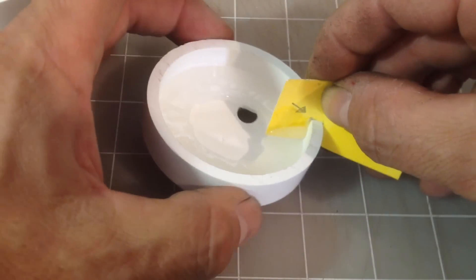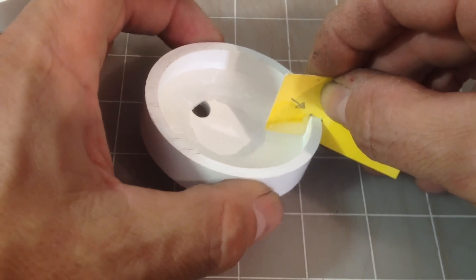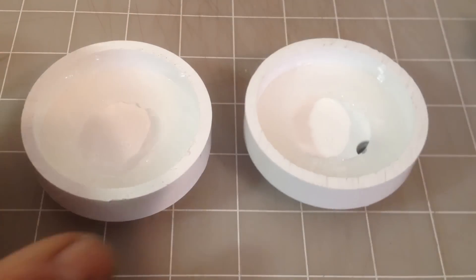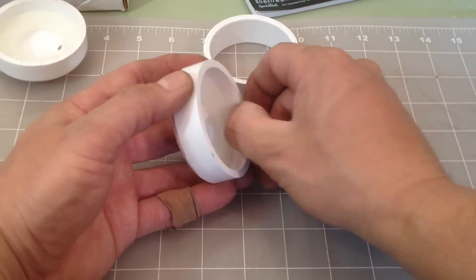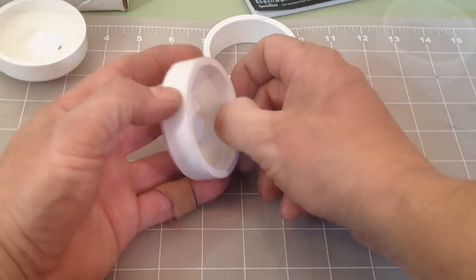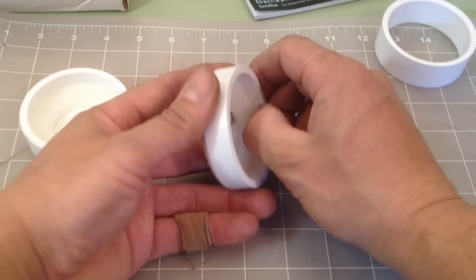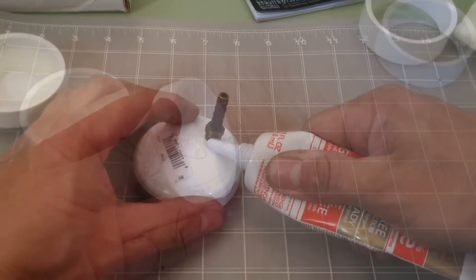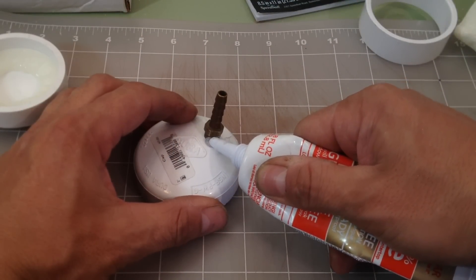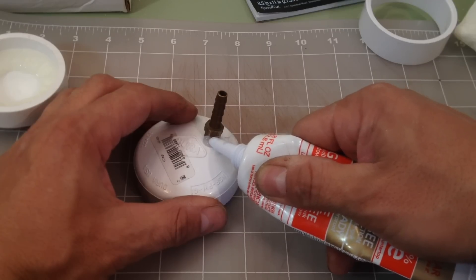I use the same process to complete the second PVC cap. After letting the silicone cure overnight I carefully remove any residual silicone from the inner side wall of the caps. After reinstalling the 1/8 inch barb fitting I run a bead of silicone around the threads to create an airtight seal.